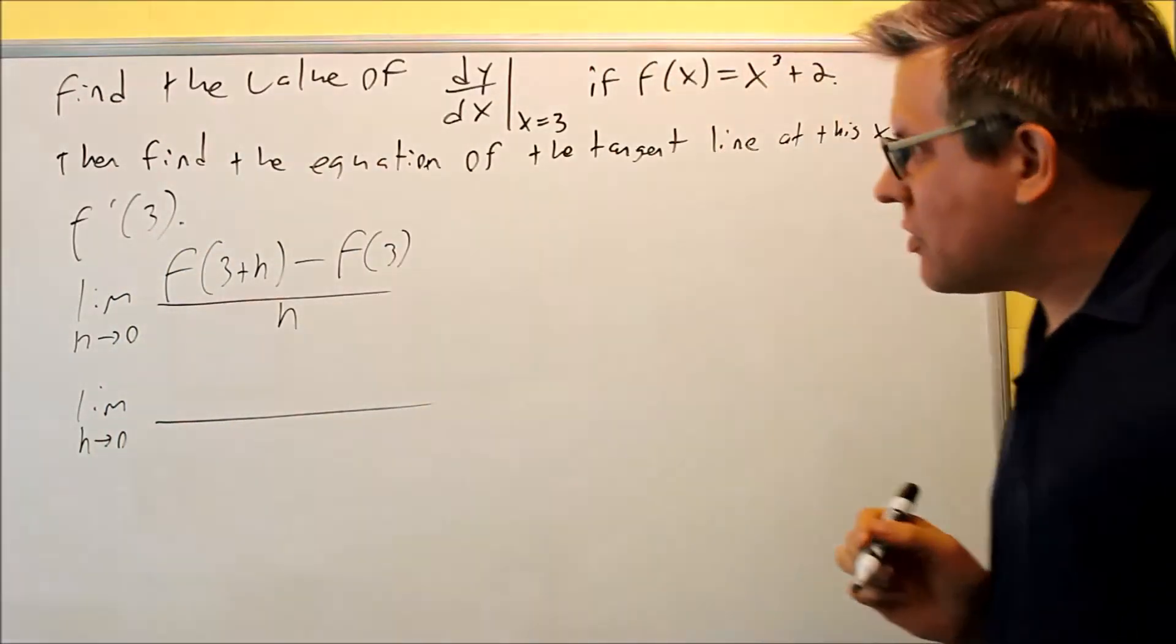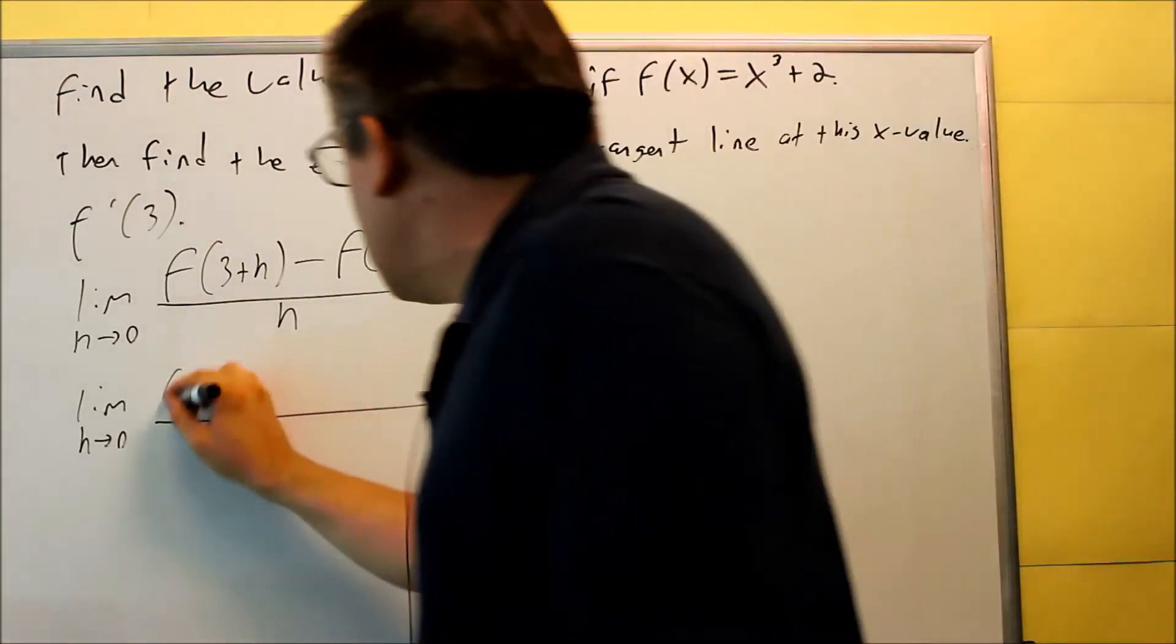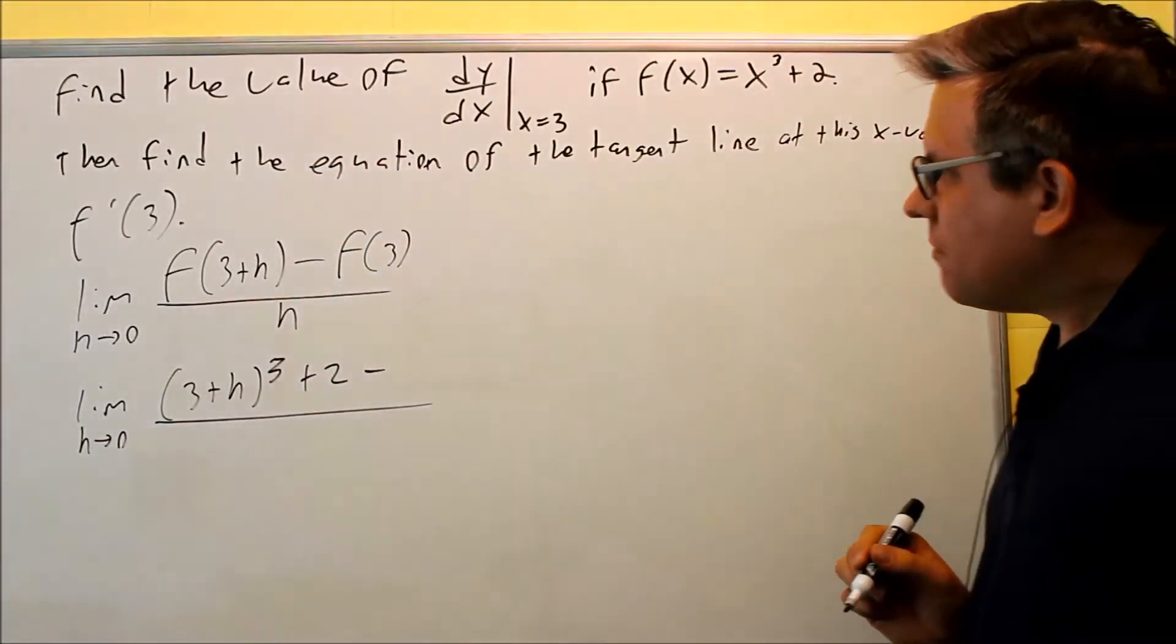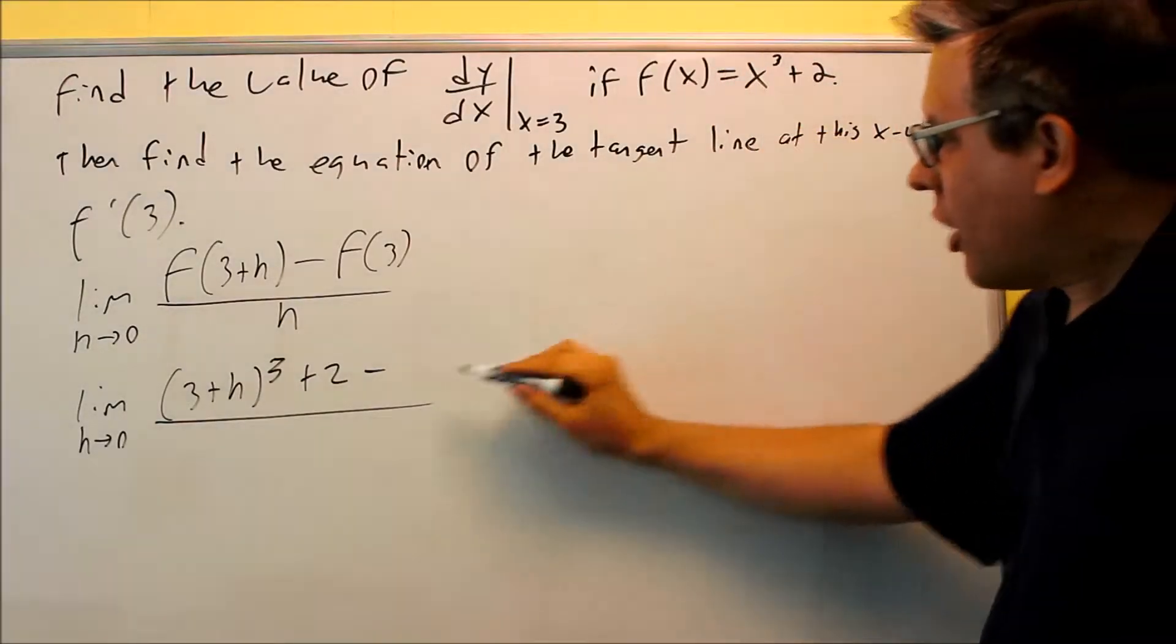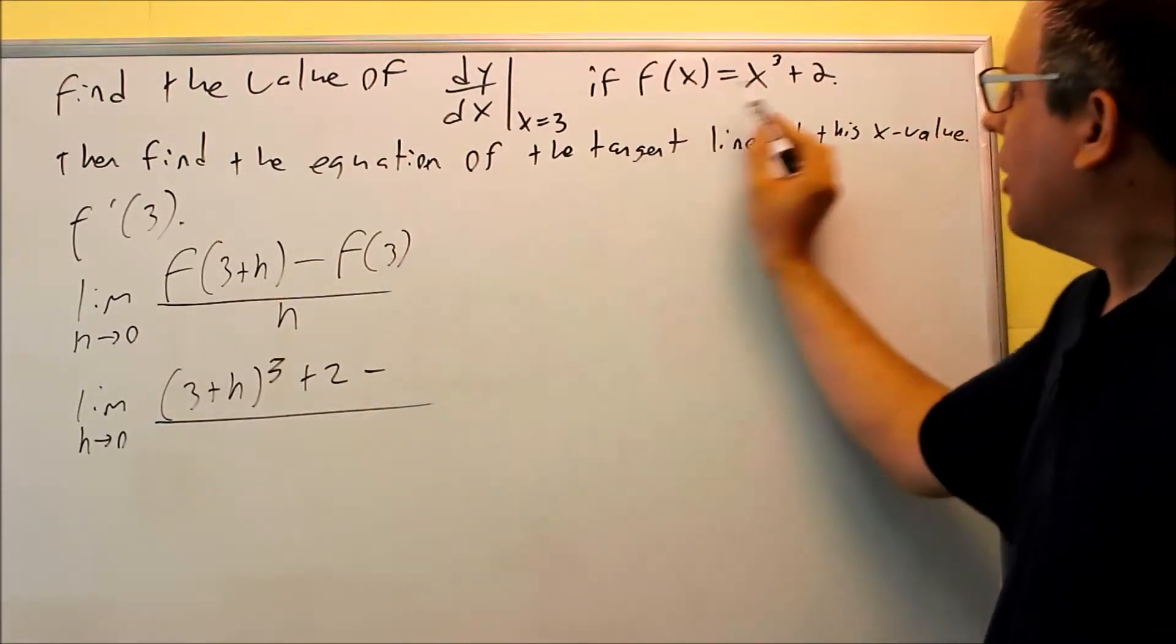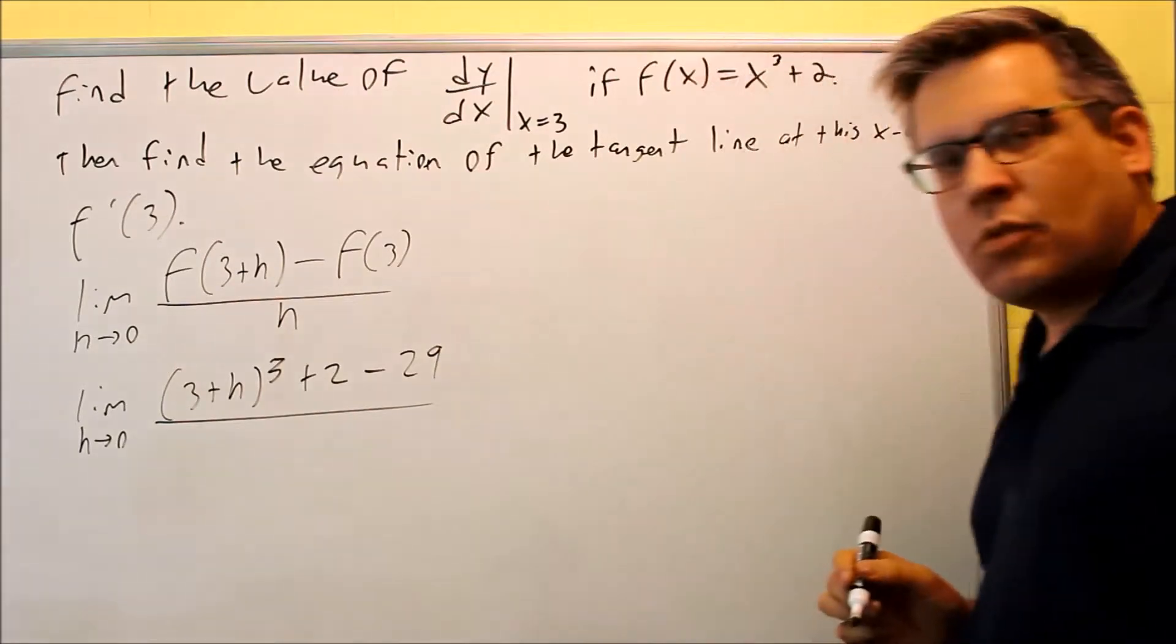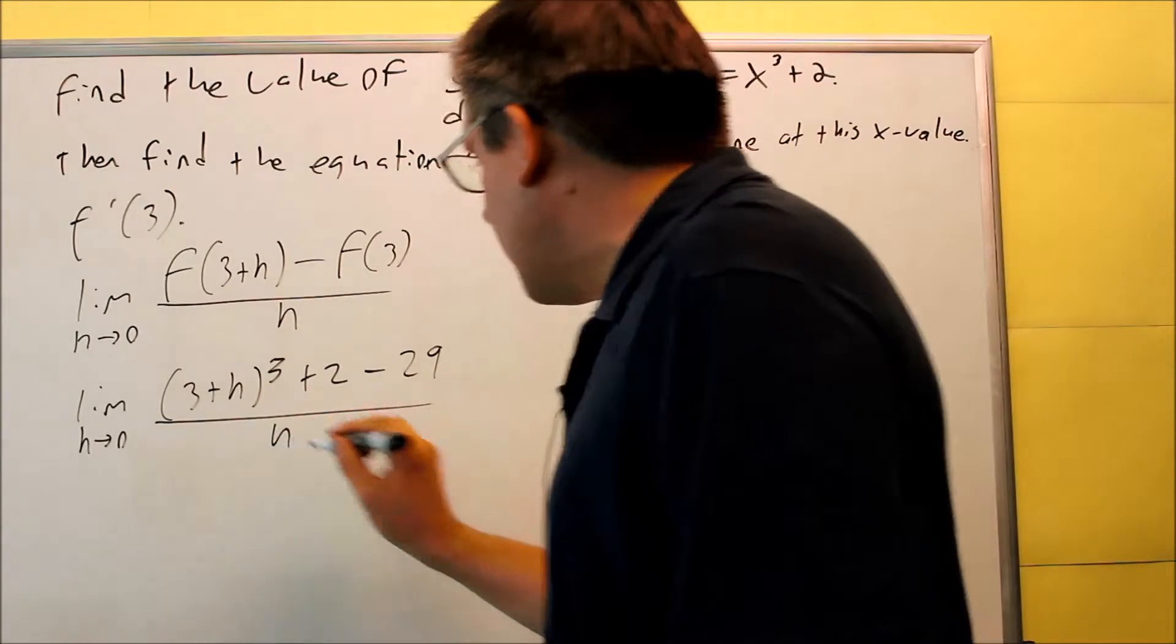Alright, so now we're going to do f of 3 plus h. That's putting in x plus h inside here. So I'm going to do 3 plus h cubed and then plus 2 minus f of 3. I've got to put 3 in here to figure out what value to put in. So this time they don't give us a point, so I've got to plug the 3 in. So if I put 3 in here, 3 cubed is 27 plus 2, which is 29. So I'm going to put 29 in, that's for my f of 3. That's the y value when x is 3, then I have h.